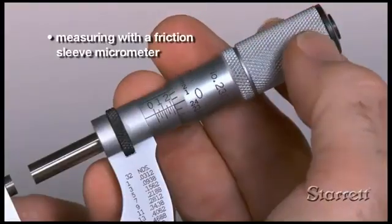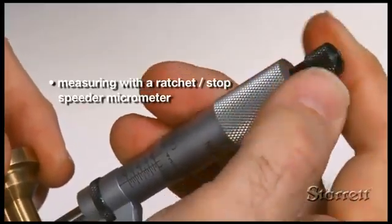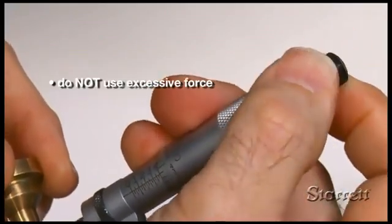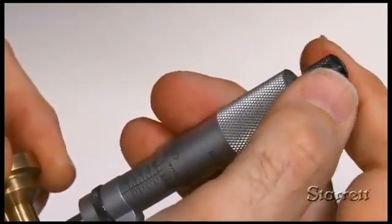Move the thimble with your right hand, thumb, and index finger on the friction thimble or ratchet stop. Don't use excessive force. Light but firm contact pressure ensures accurate measurements.